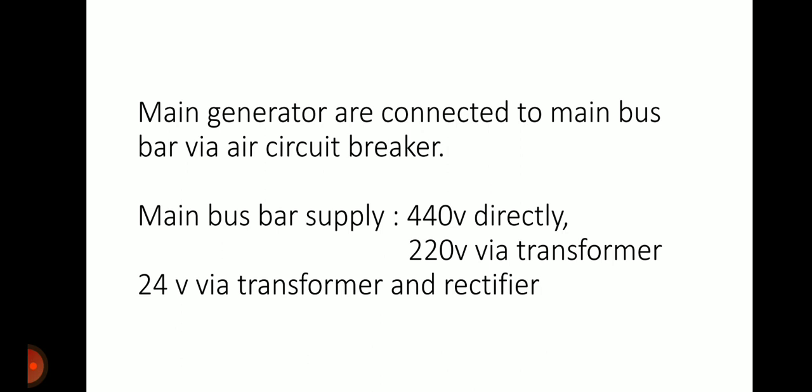The main generator connects directly to the bus bars, supplying 440 volt supply directly, 220 volt via transformer, and 24 volt via transformer and rectifier for DC supply. Shore power — key technology connected to the port via air circuit breaker — also feeds into the bus bar line.